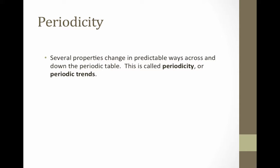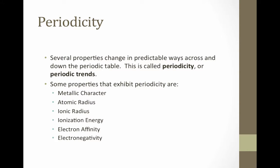Since the periodic table corresponds in its arrangement to electron configuration, and because electron configuration determines properties, the elements on the periodic table also show trends or patterns in their properties. These properties are said to exhibit periodicity or periodic trends. Some properties that exhibit periodicity are metallic character, atomic radius, ionic radius, ionization energy, electron affinity, and electronegativity.